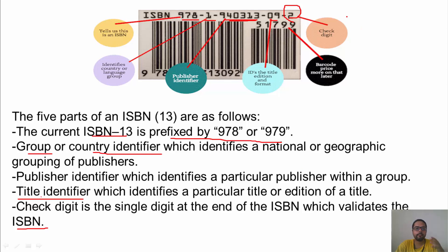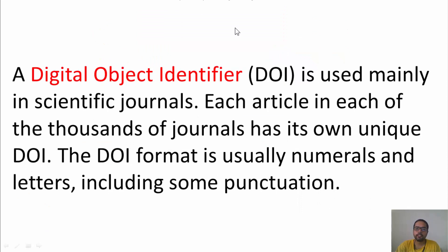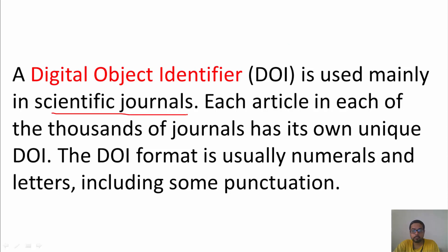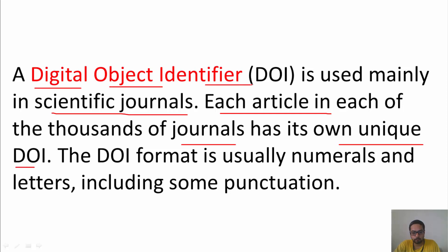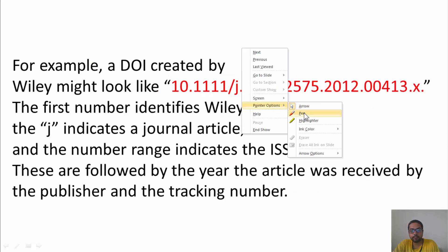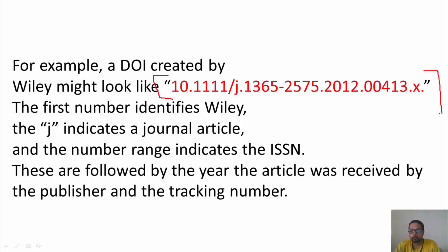ISBN is for books, ISSN is for journals, and DOI is for articles — every research article. DOI stands for Digital Object Identifier and is used by scientific journals. As you can see in this example of a DOI: the first numbers represent the publisher, then 'j' indicates this is a journal article, followed by the ISSN number of the journal, the year of publication, and finally an article tracking number.